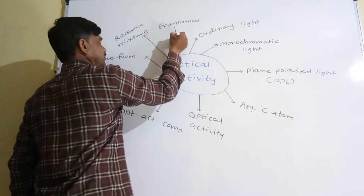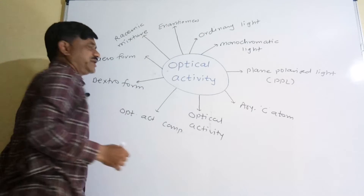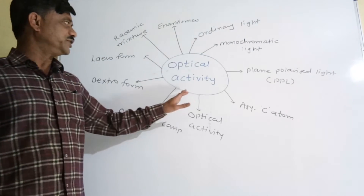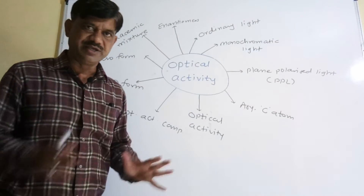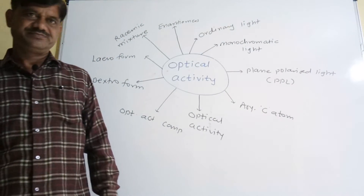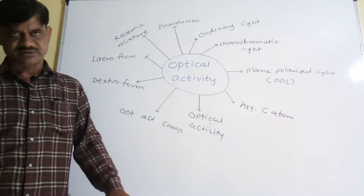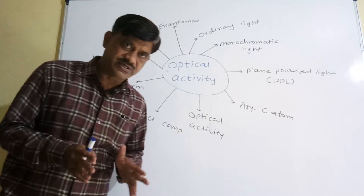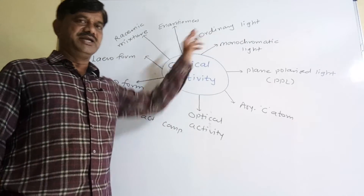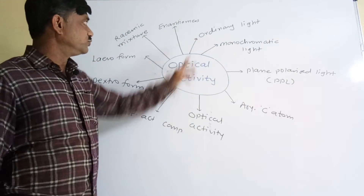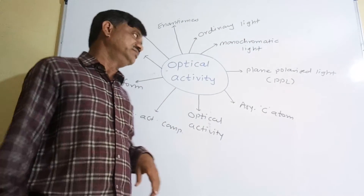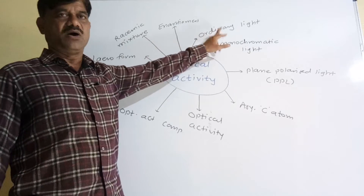If we go through old papers for board exams or first and second level MCQs in various entrance exams, you will notice these terms are very, very important. Now, what do you mean by ordinary light? In physics also, we came across these terms. Ordinary light is light having different wavelengths, or which vibrates in different possible planes. That is known to be ordinary light.